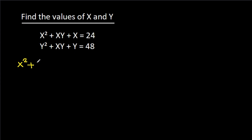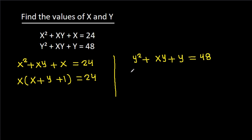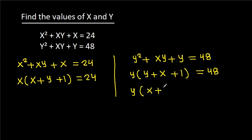We have x squared minus xy minus x equals 24, and we can take x common, giving x times (x plus y plus 1) equals 24. And we have y squared minus xy minus y equals 48, and we can take y common, giving y times (x plus y plus 1) equals 48.